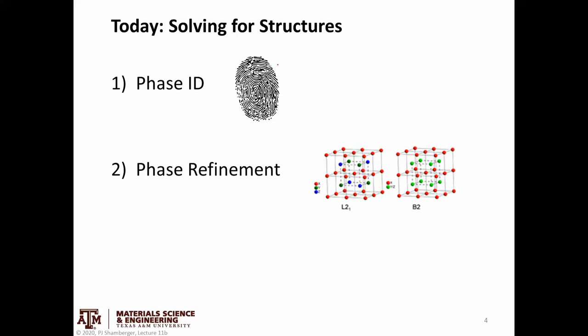When we solve for structures, we can break it down into two aspects. One is phase ID — like a fingerprint, asking what phases are present in the system. If you scoop up sand at the beach or grind up a synthesized material and put it on a diffractometer, phase ID tells you what phases are there. Phase refinement goes one step further: when you refine the whole pattern, you can get additional information like where atoms are sitting within the unit cell, whether they're ordered or disordered, and things affecting peak shape.